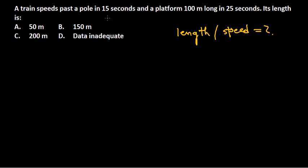Four options are provided and option D is 'data inadequate.' Many students, seeing that length and speed are not provided, assume it's data inadequate. But this is not data inadequate, because they are providing you the length of the platform. Once the platform length is given, you know the total distance covered by the train is the length of the platform plus the length of the train. If the platform length were not given, then the answer would be data inadequate.